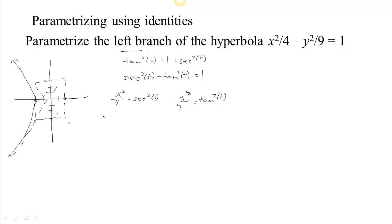Solving for x and y gives two possibilities: x equals plus or minus 2 times secant of t, and y equals plus or minus 3 times tangent of t. We need to choose bounds on t and a choice of plus or minus so that we trace over the left-hand branch of the hyperbola.